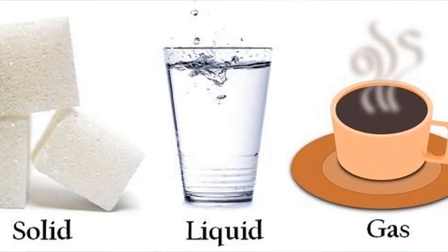I have explained the three states of matter, their properties, characteristics, molecular arrangement, and intermolecular structure. Please learn from your book and go through table 3.1 on page 25 which gives the full distinguished properties of solid, liquid, and gases. That's all for today — take care of your health and have a nice day.